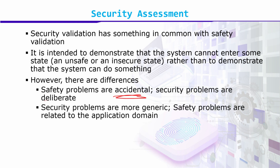Safety problems need different kinds of handling routines, whereas security problems are deliberate — for example, a hacker accessing your bank data is a deliberate activity. Security problems are more generic, while safety problems relate to the application domain. So if a safety problem arises, it will have some relation to the application domain, whereas a security problem is generic and has something to do with misuse of an application.